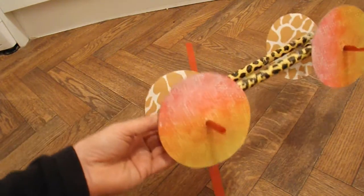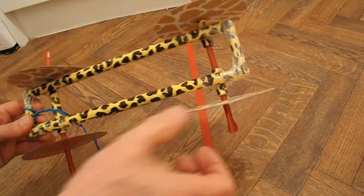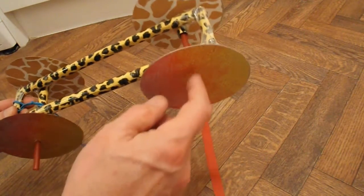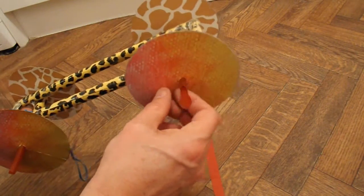The wheels are discs of card. Two discs stuck together. With an extra disc in the middle just to thicken it up a bit. Where the axle goes through.